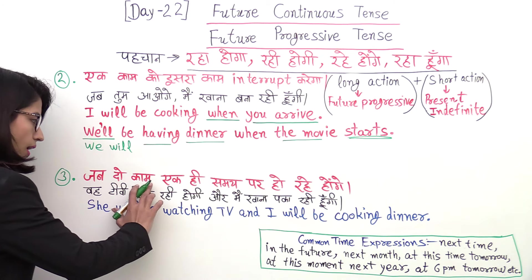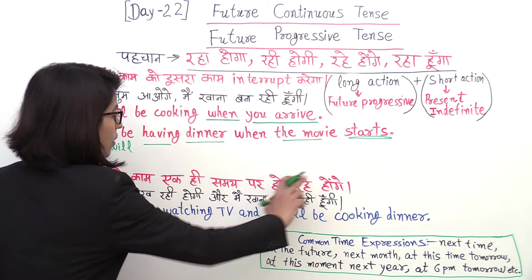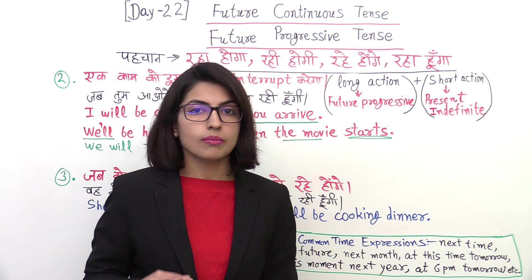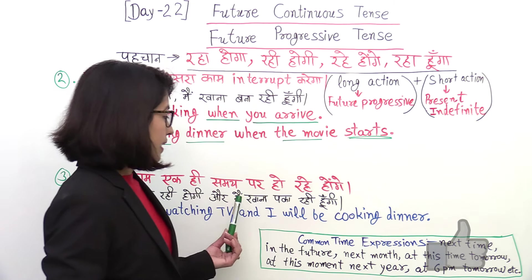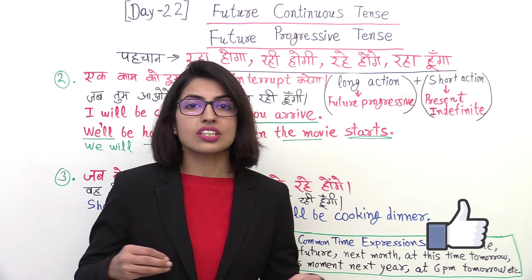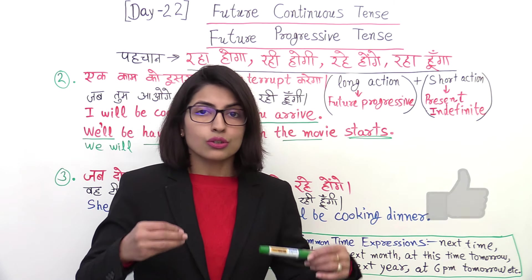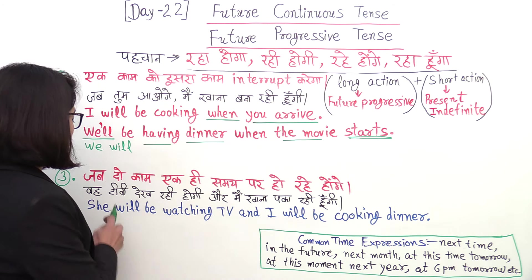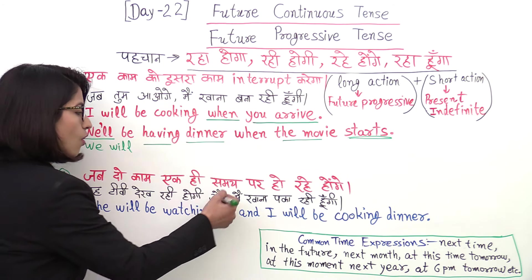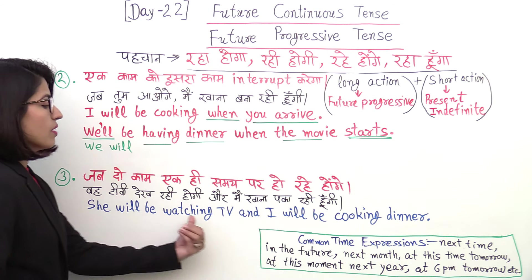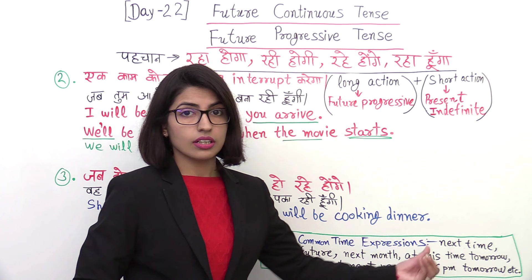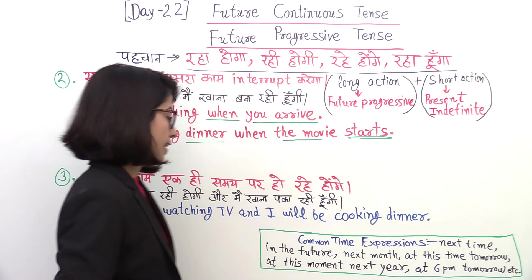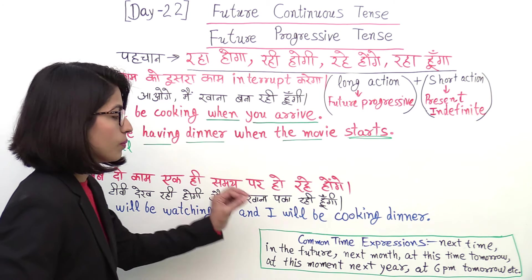Point 3 is when two tasks are being done at the same time in the future. Unlike Point 2 where one action interrupts another, in this case both tasks continue simultaneously. We use Future Progressive for both. For example: She will be watching TV and I will be cooking dinner. Both actions are parallel and happening at the same time, so Future Continuous is used for both.